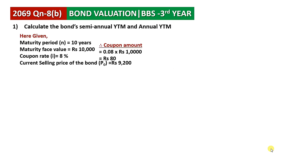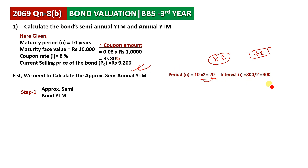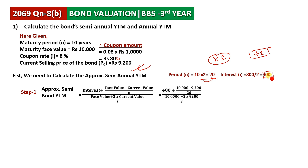Step 1: We find the approximate semi-annual YTM. Since this is a semi-annual case, the coupon interest is split in half: 800 divided by 2 equals 400. The formula is: interest plus face value minus current value divided by n, all divided by face value plus 2 times current value divided by 3.